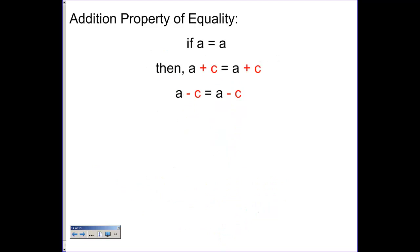Addition property of equality. And that says if we have an example like a equals a, then a plus c is going to equal a plus c. Notice that we will add the same amount on both sides. Now, we call it the addition property of equality, but since we can rewrite all subtractions as an addition,